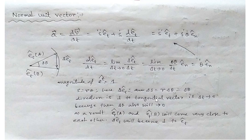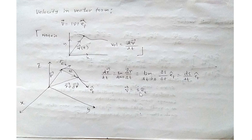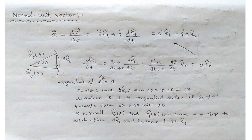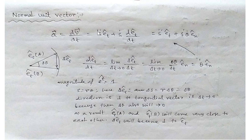For velocity, we only need the tangential unit vector e_t. But for acceleration, we need two different unit vectors: one tangential and one normal (or radial). To get acceleration, we differentiate velocity with respect to time: a = dv/dt. Differentiating v = ṡ·e_t using the product rule, we keep e_t constant and differentiate ṡ to get s̈·e_t, then keep ṡ constant and differentiate e_t with respect to time. This gives us s̈·e_t + ṡ·θ̇·e_n.